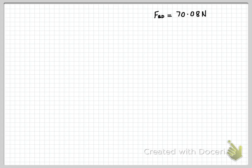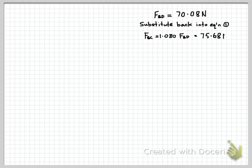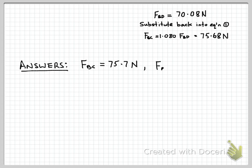Doing the algebra and calculations, we get FBD equals 70.08 newtons. Substituting back into equation 1, FBC equals 75.68 newtons. Writing the final answers clearly and rounding to three significant figures to represent the level of uncertainty in the original data: FBC equals 75.7 newtons and FBD equals 70.1 newtons.